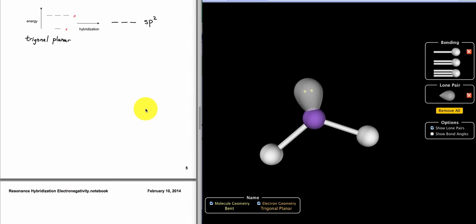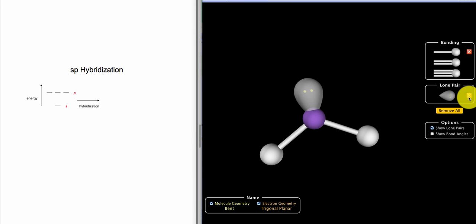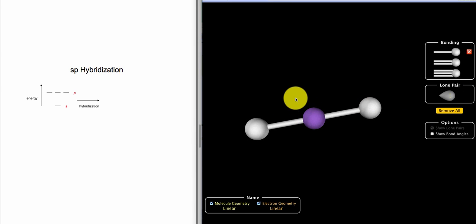Finally, we can quickly go through sp. sp only requires the use of two hybridized orbitals - two orbitals mixing together to form two degenerate sp hybridized orbitals.